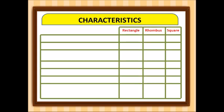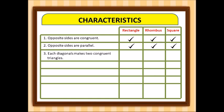The first characteristic is that opposite sides are congruent — true for a rectangle, a rhombus, and the square. The second is opposite sides are parallel — again true for all three. The third is that each diagonal makes two congruent triangles — also true for all three. The fourth is that opposite angles are congruent — again true for all three.